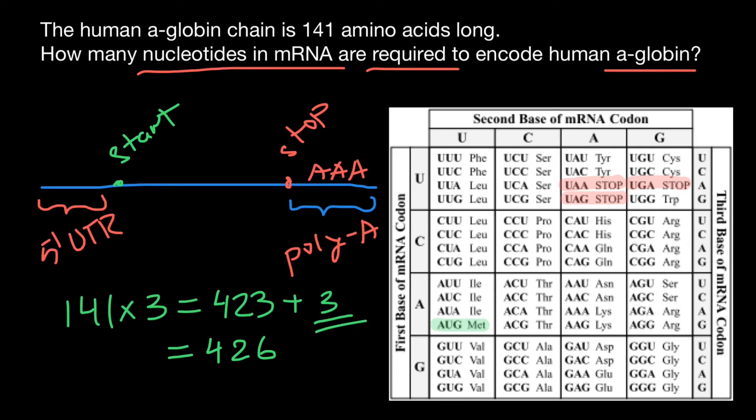We know that we need 423 nucleotides that specify 141 amino acids. Plus we also know that we need a stop codon for translation to stop. So the total number would be 426.